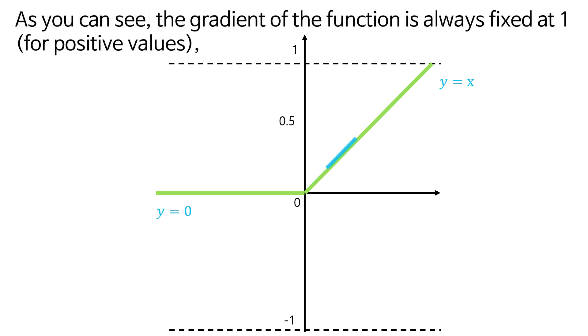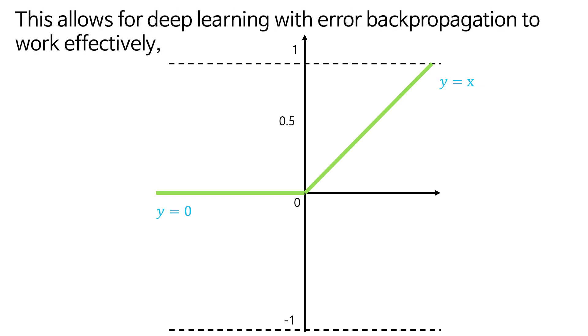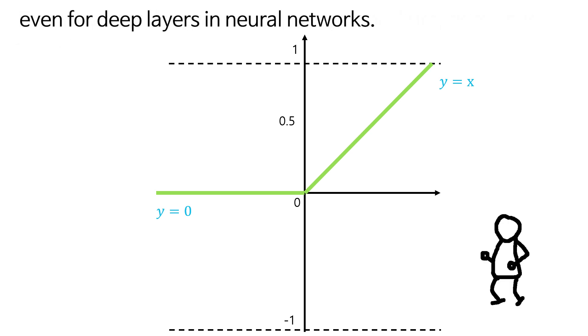As you can see, the gradient of the function is always fixed at one for positive values, which eliminates the problem of vanishing gradients. This allows for deep learning with error backpropagation to work effectively, even for deep layers in neural networks.